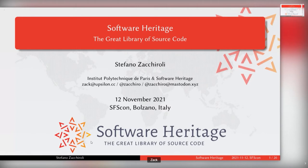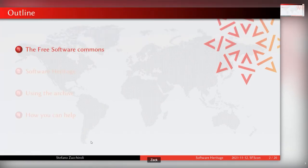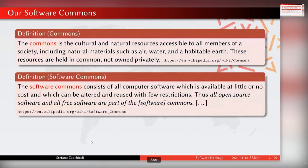Let me start with a more general notion which is dear to many people active in free software and those who care about the sustainability of various ecosystems — that is the notion of commons. Commons, which in Italian we call 'beni comuni', are all those resources accessible to all members of society, encompassing goods held in common and not owned privately. This is relevant in the context of digital goods, in particular the notion of the software commons, defined as all computer software available at little or no cost which can be altered and reused with very few restrictions.